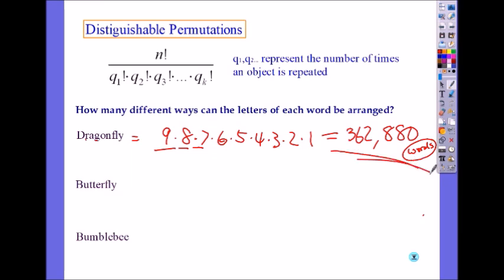But here, look at this. Butterfly. It's still nine words but think about it. Wouldn't this T, the first T going to the second T and second T going to the first T, make a different word? No, it's still butterfly.